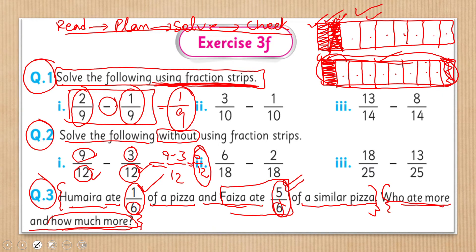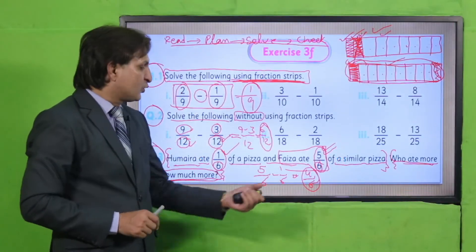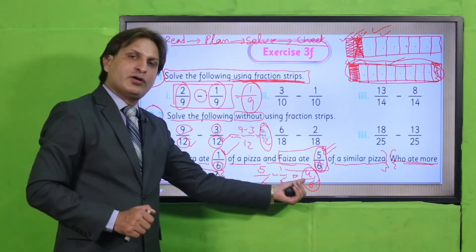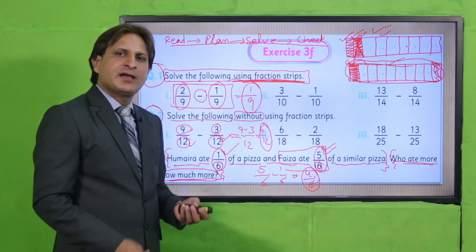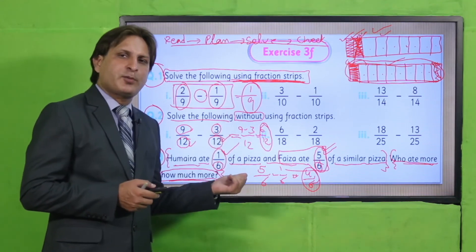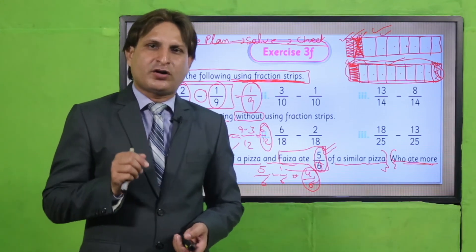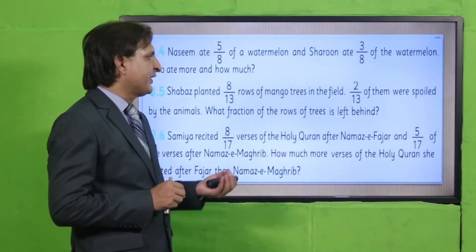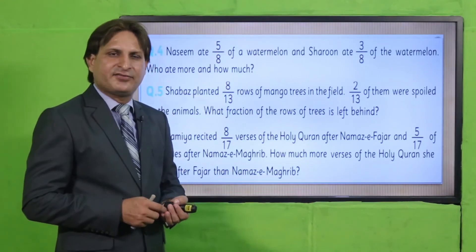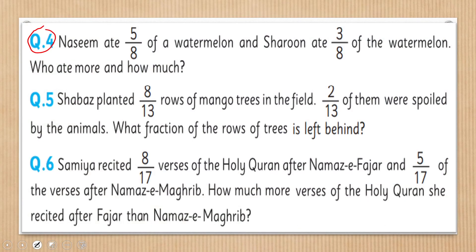کتنا زیادہ کھایا — اس کے لیے subtraction کریں گے۔ Greater fraction میں سے smaller subtract کر دیں: 5/6 minus 1/6 = 4/6۔ یہ result ہے — Faiza نے 4/6 part of pizza زیادہ کھایا۔ اسی طرح exercise کے باقی word problems solve کریں، description box میں دیے گئے solution سے tally کریں، اور اپنا solution teacher کو submit کروائیں۔